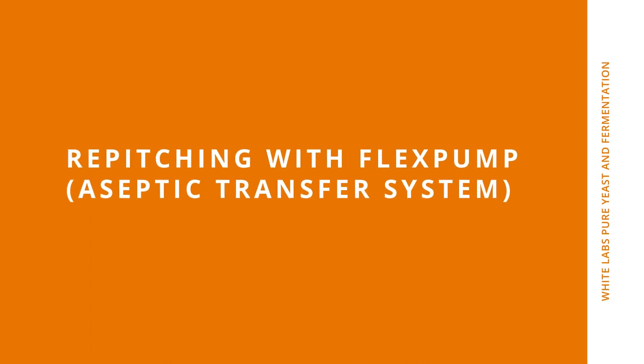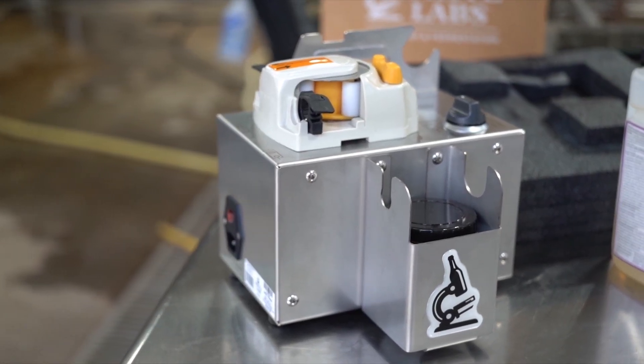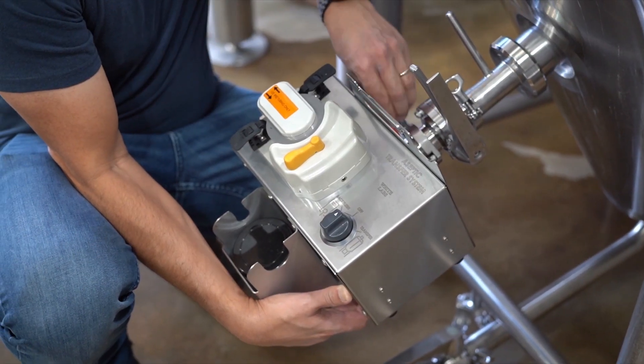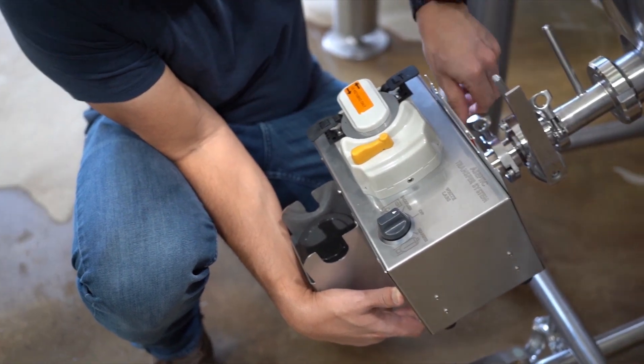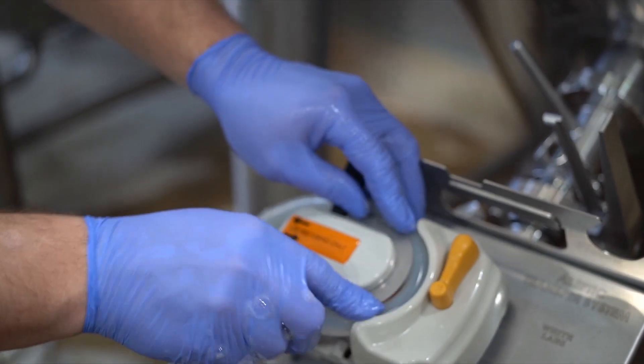The White Labs Flexpump offers an additional method for pitching from Flexbrink or pure-pitched next generation packaging. This novel method for pitching yeast was developed in conjunction with the Flexbrink in order to make the repitching process as simple and efficient as possible.